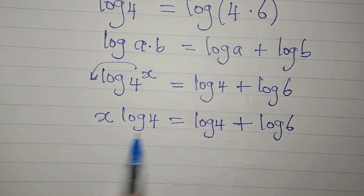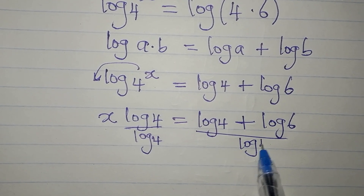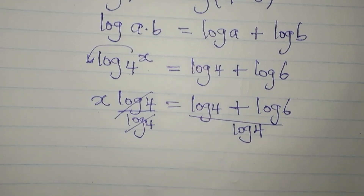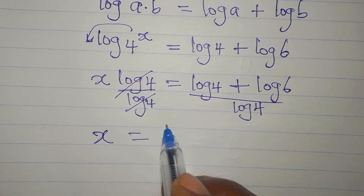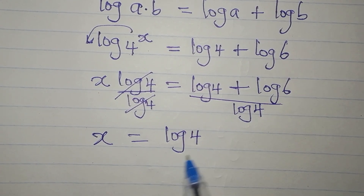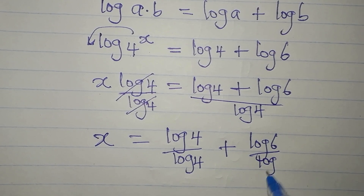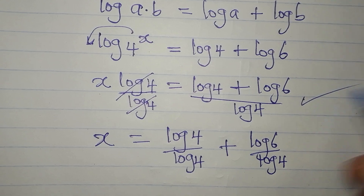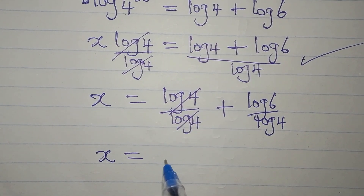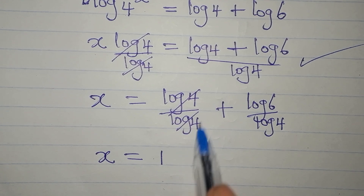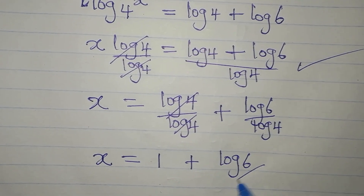Since we are looking for the value of x, we are going to divide both sides by log 4. This takes log 4 away so that x becomes the subject. We can split what we have: log 4 over log 4 plus log 6 over log 4. Now, some learners will say log 4 divided by log 4 is 0, but that is not correct — it's going to be 1. So x equals 1 plus log 6 over log 4.